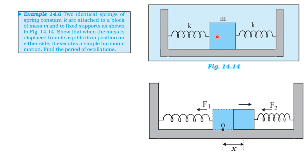Looking at figure 14.14, the block will undergo oscillation. If we look at the block M, the block M is displaced towards the right. That is shown in the diagram.